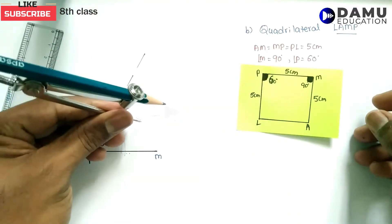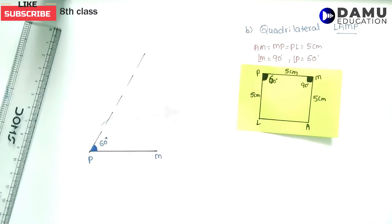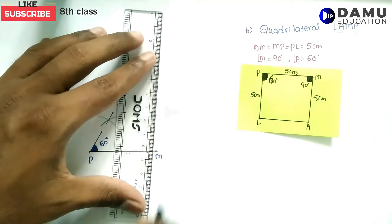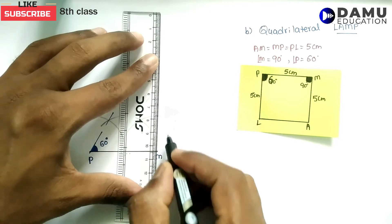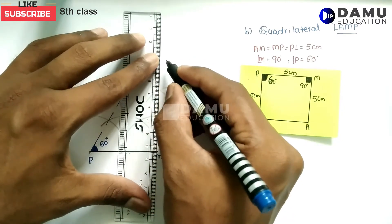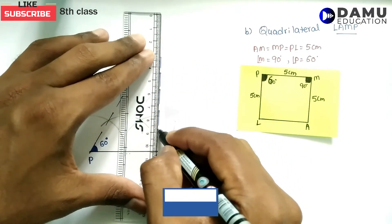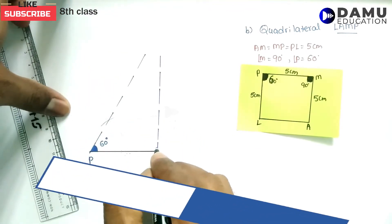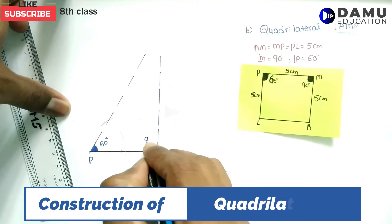From the 60 degree mark, again we need to draw a ray like this and extend it. This gives us 90 degrees. This is the angle of 90 degrees as required.